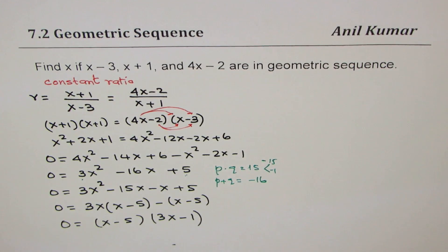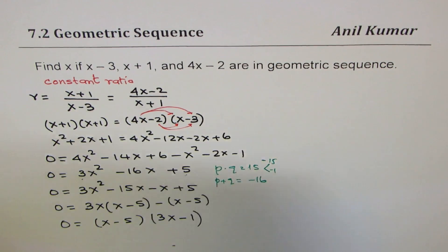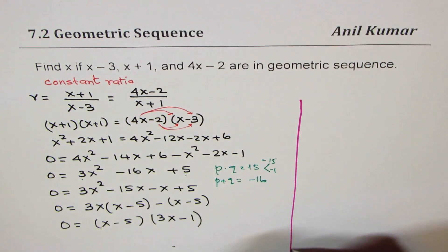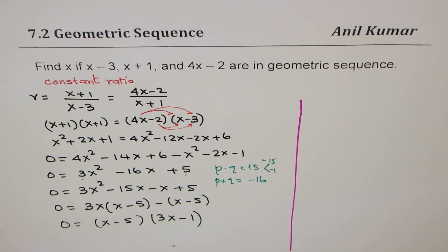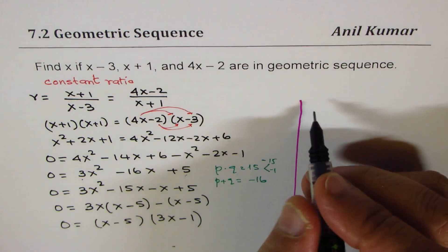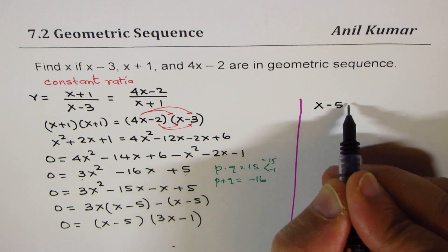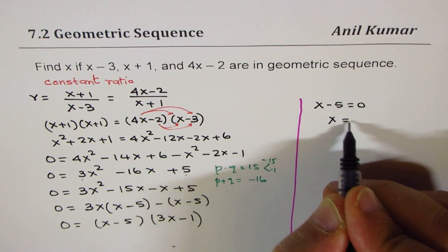So that gives you two solutions. Either factor could be zero. The solutions are: x - 5 = 0, which gives us x = 5. This is one solution.